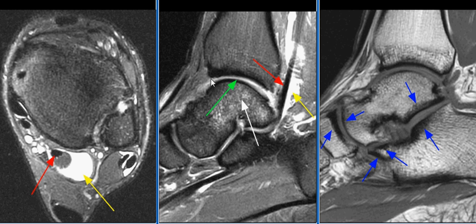There is mild osseous edema of the talus at the superior aspect of the sinus tarsi, consistent with stress edema. The MR findings are consistent with flexor hallucis longus tenosynovitis and stress edema in the talus.